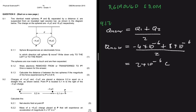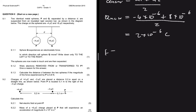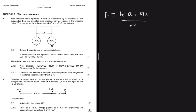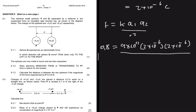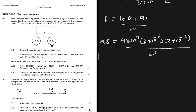Now we apply Coulomb's law: F = k·q1·q2 / r². The electrostatic force is 0.8 N, k = 9×10⁹, q1 = 2×10⁻⁶ C, q2 = 2×10⁻⁶ C, and r² = d². Cross-multiplying and rearranging, we get d² = (9×10⁹ × (2×10⁻⁶)²) / 0.8.